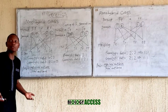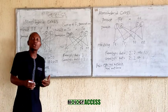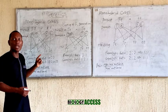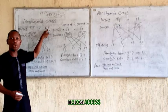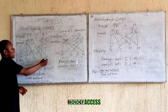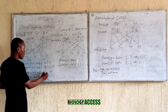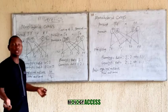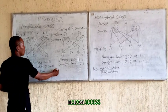Now I can ask: what is the probability of getting a tall individual when you cross a homozygous tall pea plant with a homozygous short pea plant? All four individuals are tall, so the favourable outcome is 4 and the total outcome is 4. What about the probability of having a short individual? There is no short individual, so it is 0 out of 4.